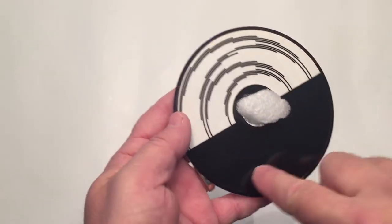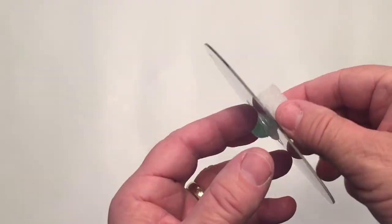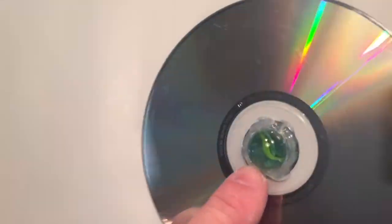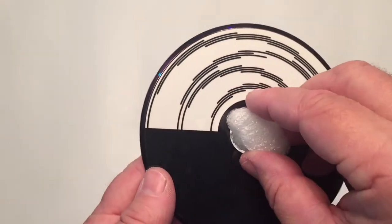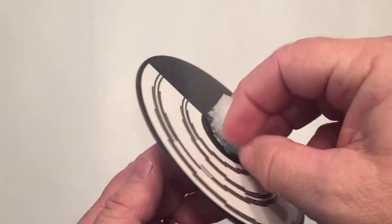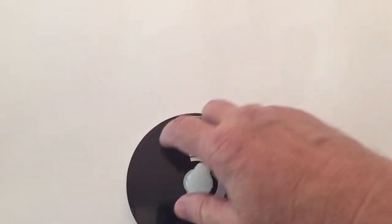To set up this experiment, go to the link in the description and print out the template, then cut it out and glue it on top of the CD with any kind of glue stick. Next, take a hot glue gun and secure the marble on the bottom, then take a piece of foam or a bottle cap and secure it with hot glue on the top. Now you're ready.